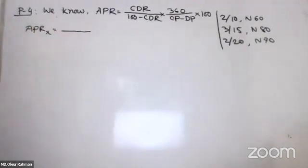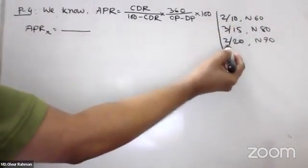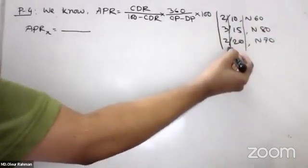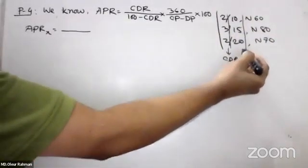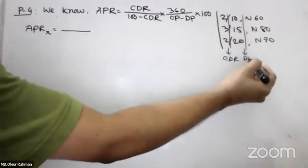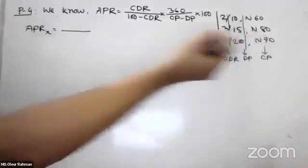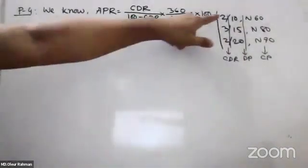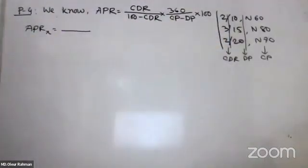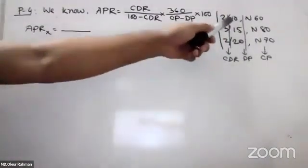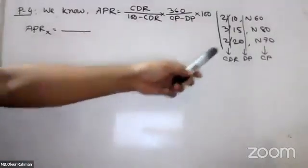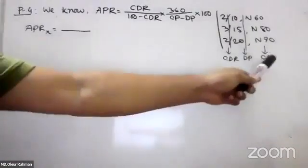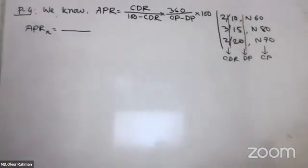CDR. Do you know this? I'll connect to it. It is D.P. It is C.P. The discount rate should be 3%. The DPI discount period is 20 days, 30 days. CP — credit period — 60 days.